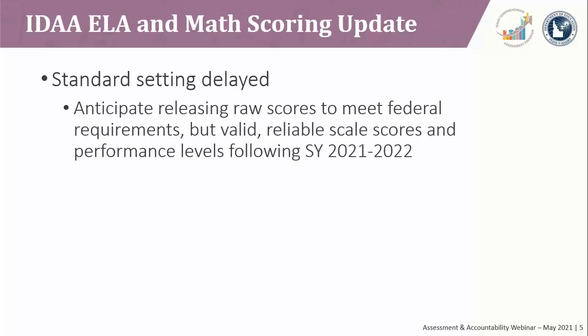But that only applies to ELA and math. We're not going to have any scores — even raw scores — for the new alternate assessments in science. Our expectation is that valid and reliable scale scores and performance levels are first going to be available after next year's administration. That's when we have the opportunity to conduct standard setting next summer. We have a waiver request in with the U.S. Department of Education right now for this change, but we wanted to let you know since that evolves a bit over time.